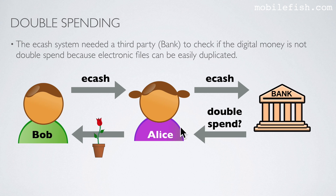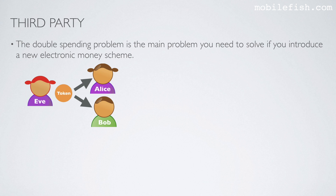If it is not double spent, Alice sends Bob the product. The double spending problem is the main problem you need to solve if you introduce a new electronic money scheme. In this drawing, Eve is double spending because she sends the same cash to both Alice and Bob.